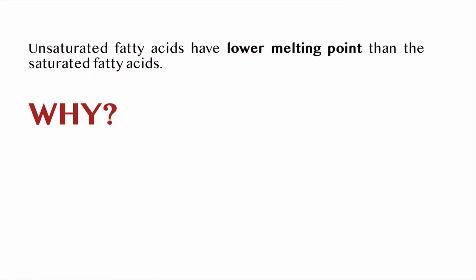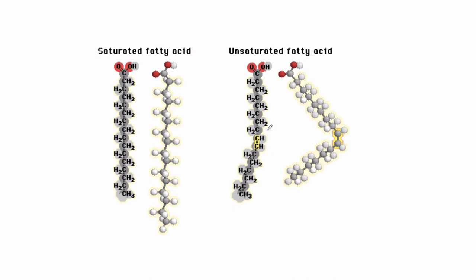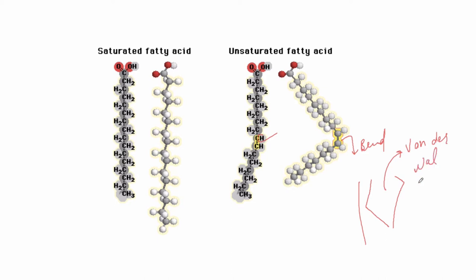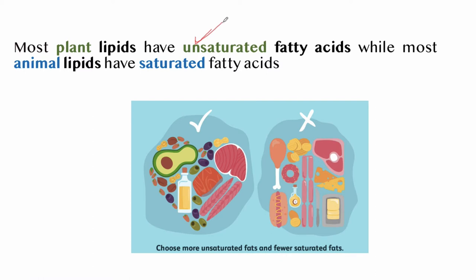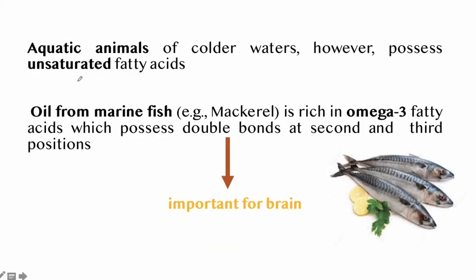Unsaturated fatty acids have a lower melting point than saturated fatty acids because double bonds cause the hydrocarbon chains to bend; therefore the fatty acids cannot pack tightly together, reducing the van der Waals forces of interaction. Most plant lipids have unsaturated fatty acids which are good for health, while most animal lipids have saturated fatty acids. Unsaturated fatty acids are also found in aquatic animals like marine fish oil, which is rich in omega-3 fatty acids — good for the brain.